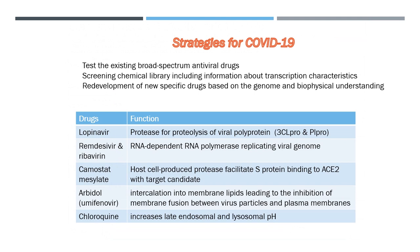Lopinavir can be used as a protease for the proteolysis of viral polyprotein into functional units, with target candidate coronavirus main protease and papain-like protease. Remdesivir and ribavirin can be used as RNA-dependent RNA polymerase inhibitors for replicating the viral genome, with target candidate RNA-dependent RNA polymerase.